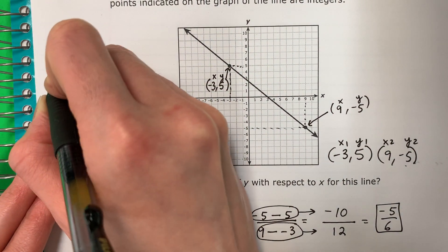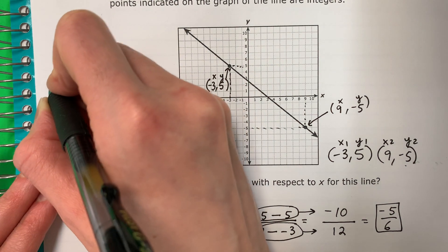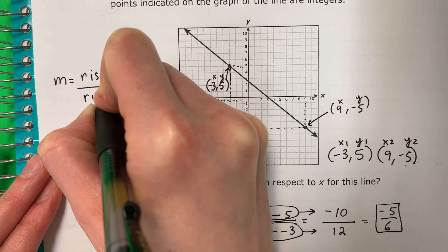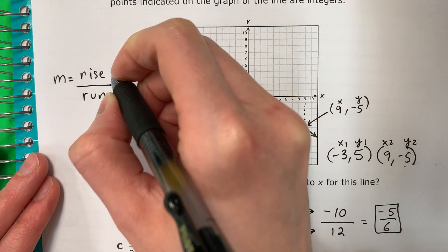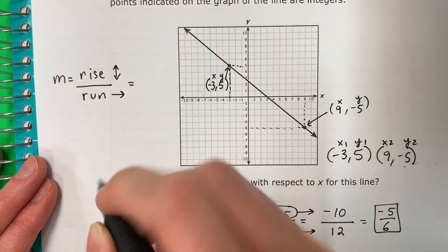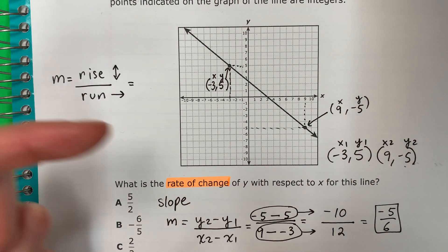So M equals rise over run. So rise is up, down, vertical. Run is always right. Okay, rise is vertical. Run is to the right.